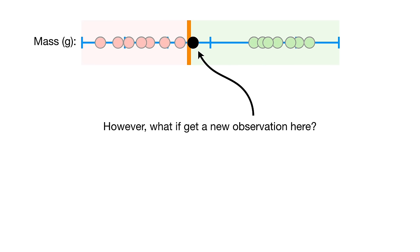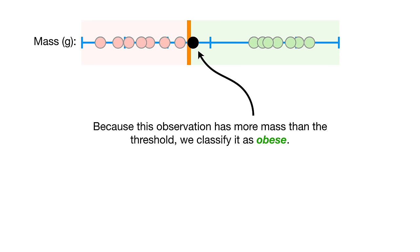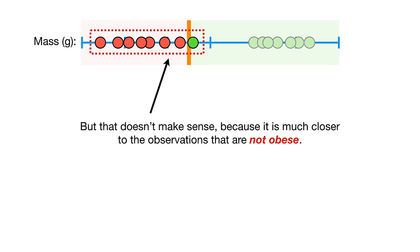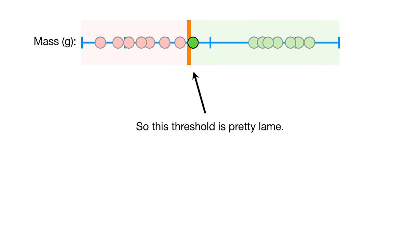However, what if we get a new observation here? Because this observation has more mass than the threshold, we classify it as obese. But that doesn't make sense, because it is much closer to the observations that are not obese. So this threshold is pretty lame — can we do better?